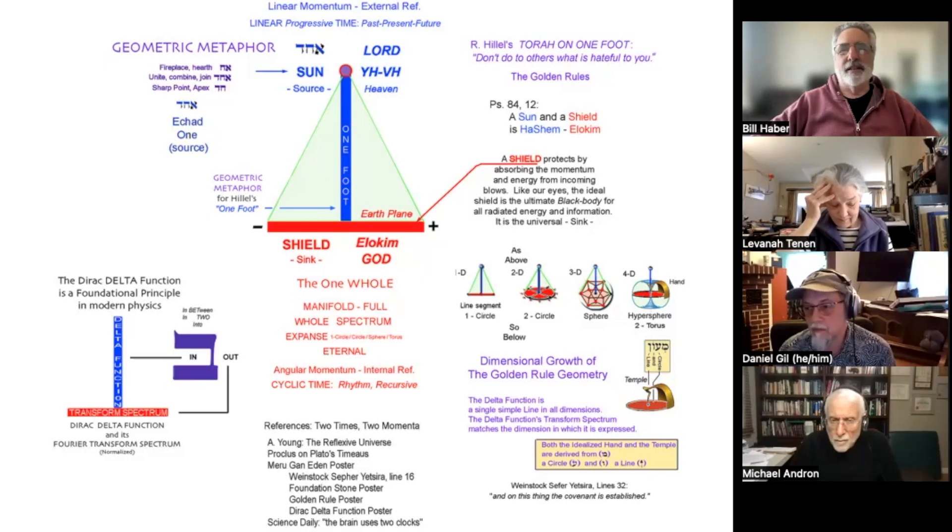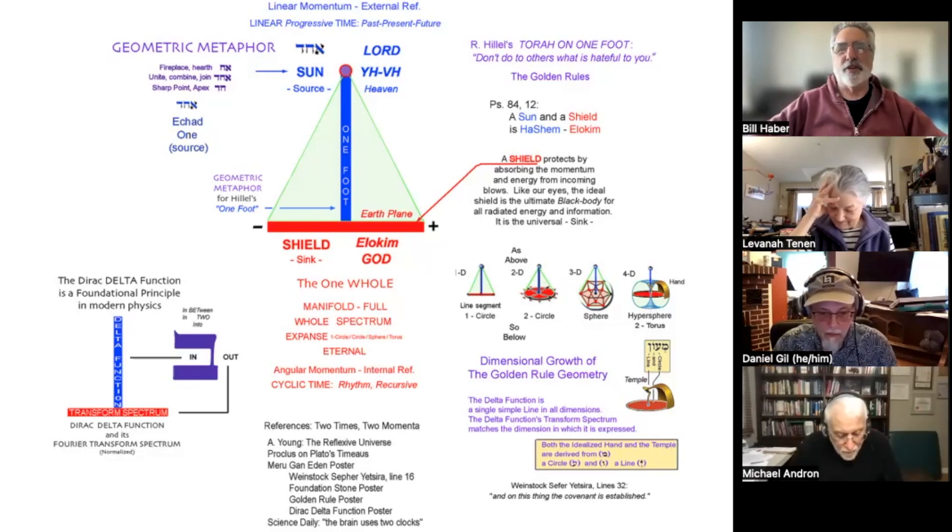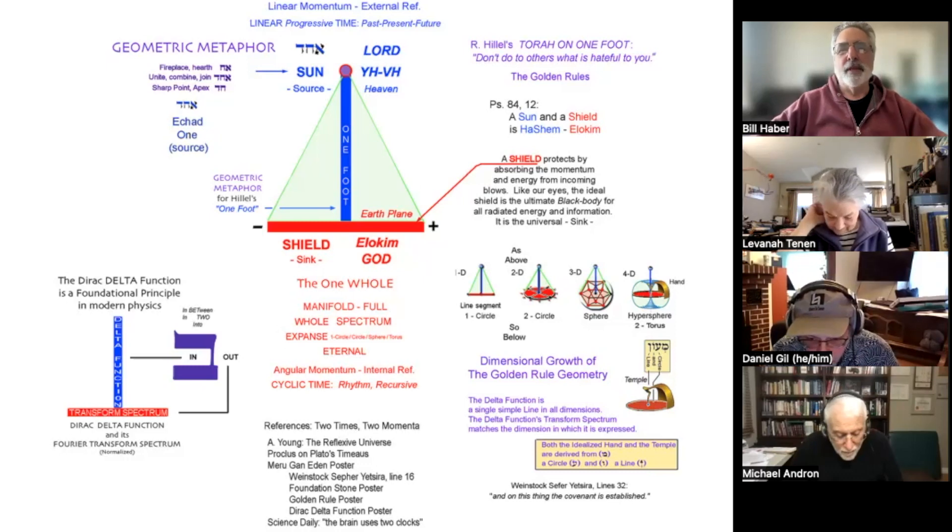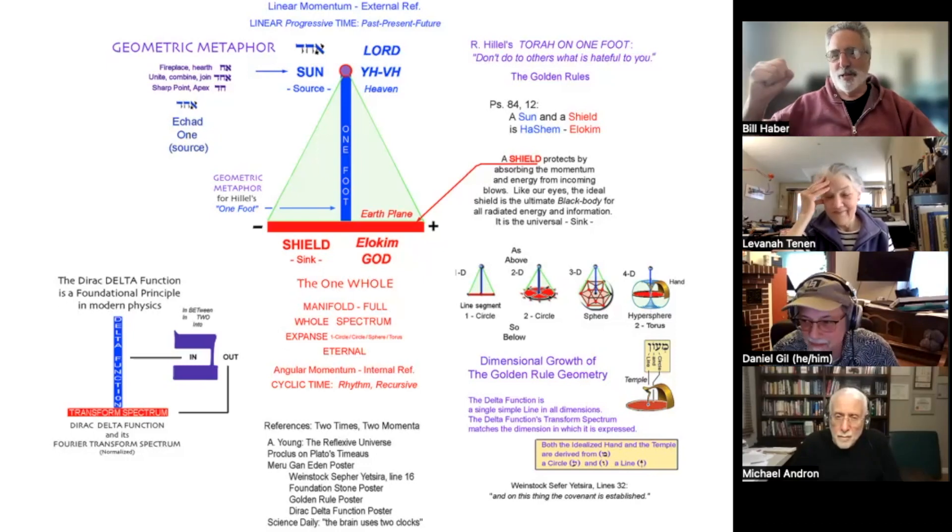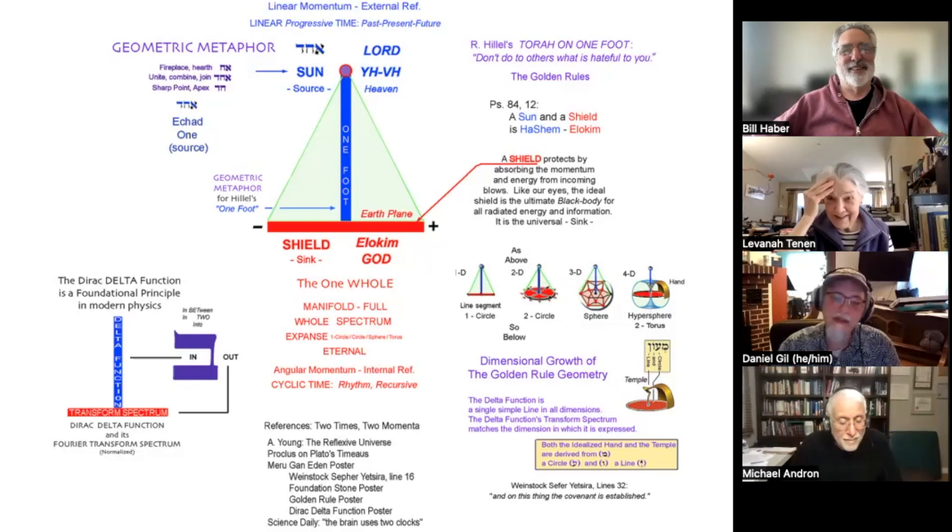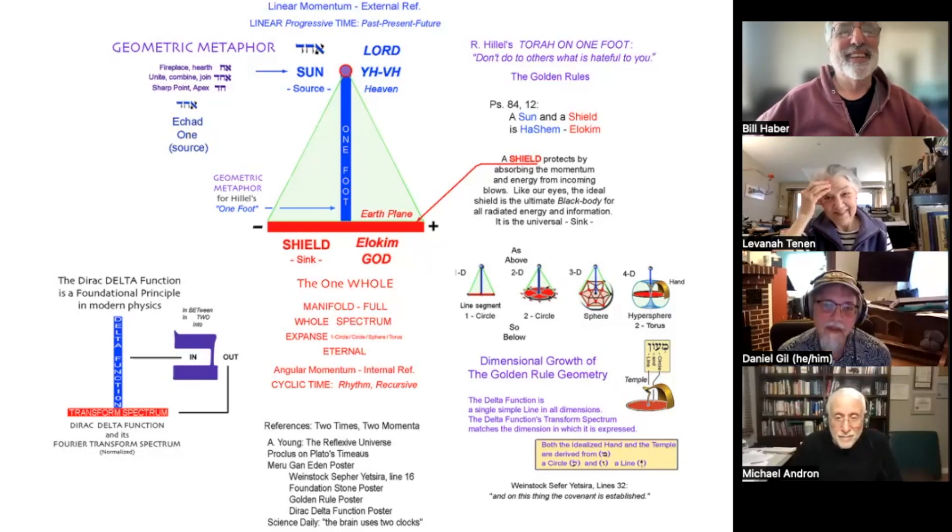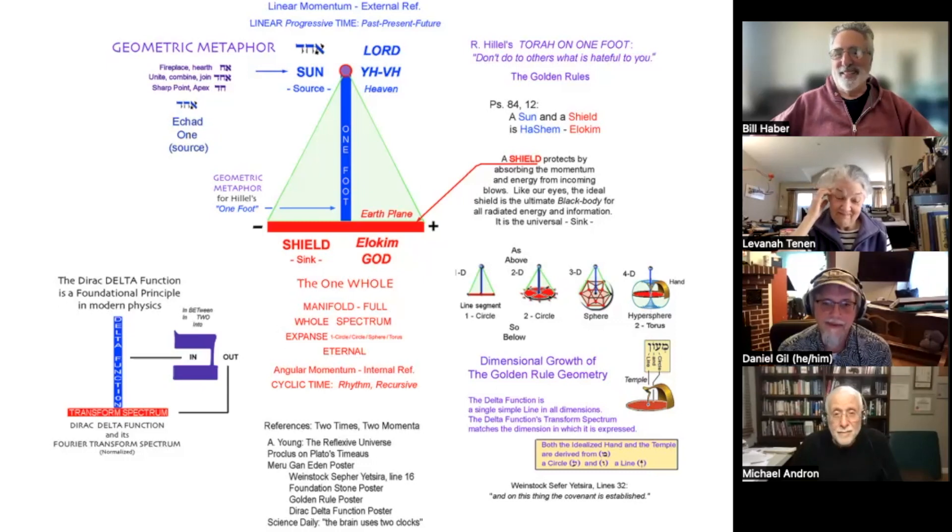And then one final little zinger at the bottom right, he's quoting from Weinstock's Sefer Yetzirah line 32. And on this thing, the covenant is established. There's the seal. There it is. It reminds me of Yul Brynner and the Ten Commandments. So let it be written, so let it be done. That sort of fits in with, gee, I hadn't really quite noticed that, but I did call it the foundational postulate. You called that right.